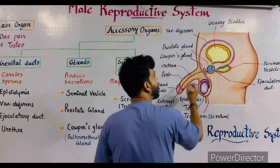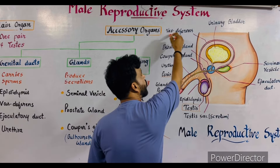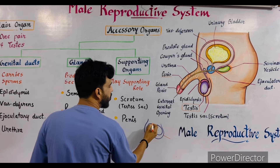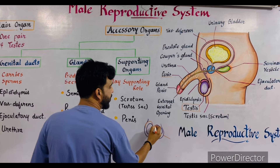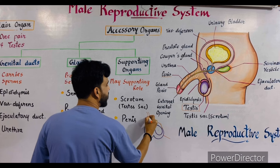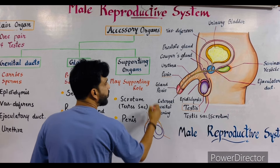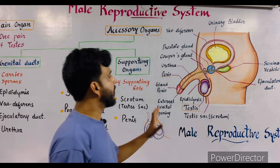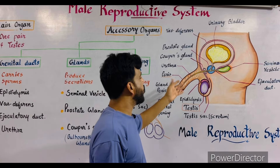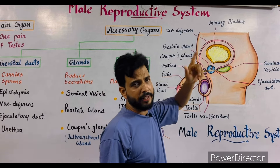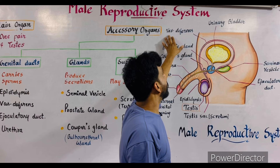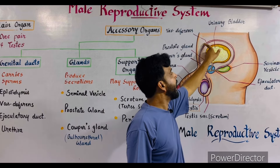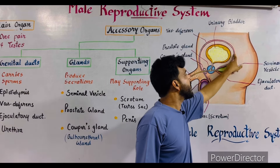After the epididymis, as you can see in this diagram, a duct arises from the epididymis which is known as the vas deferens. One more thing — there are two testes, so there are two epididymides and two vas deferens. Most organs are paired in this reproductive system, but this is a side view diagram so you can see only one vas deferens.